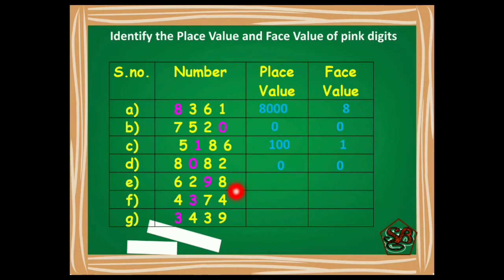Number is 6298. Now it's your turn to do it. The first place is 1's and the pink digit is at 10's place. So what will be the place value? Very good. It will be 90 and face value will be 9 only.